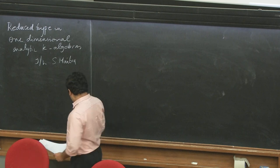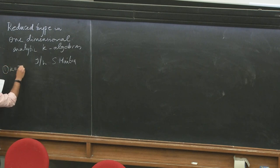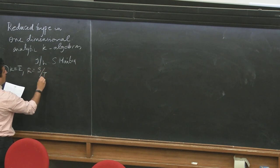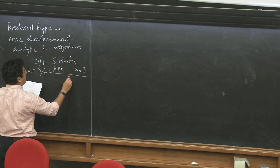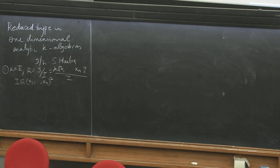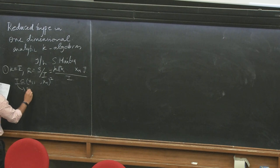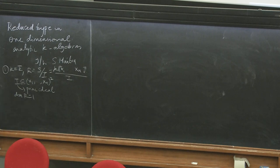The setup is the following: we work over one dimension. I'm going to assume algebraically closed. R is S mod I, which is K joint x1 through xn modulo the ideal I. I is a prime ideal, so this is actually a domain — I work only with domains, though I'm suspecting you could generalize to reduced. Of course, one-dimensional: the dimension of the ring is exactly equal to one, complete local and domain.